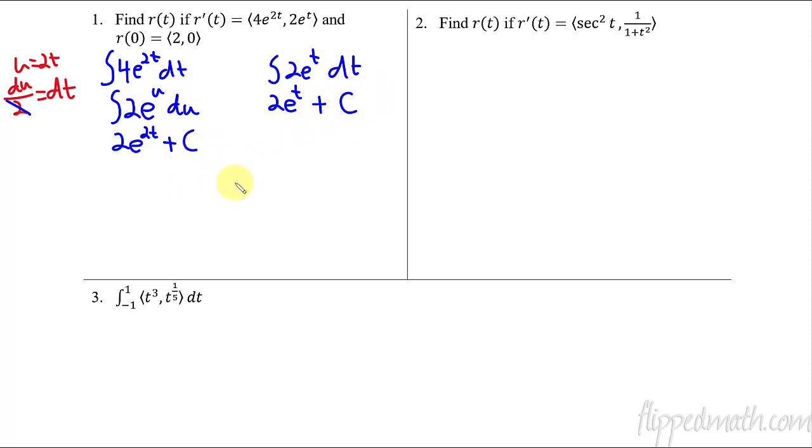Now, these constants technically are different, so I should probably label this one as c1 and this one as c2. When you're doing your work on the practice, it's not going to really matter that much. You just want to make sure you remember these are not the same values of c. They're different constants.